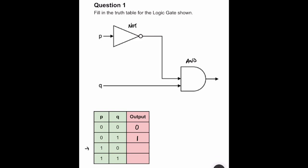The third scenario is P equals one and Q equals zero. The one going into the NOT gate turns into a zero, so we've got two zeros and the AND gate produces a zero. The last scenario has two ones: the one into P turns into a zero through the NOT gate, so they aren't both one and the gate produces a zero. The truth table output is zero, one, zero, zero.